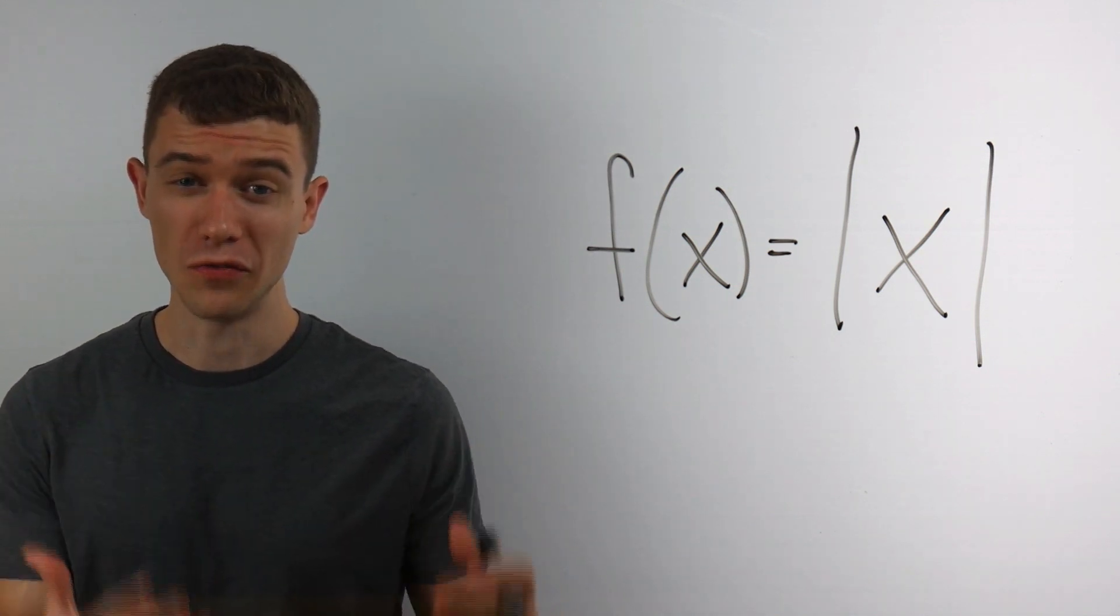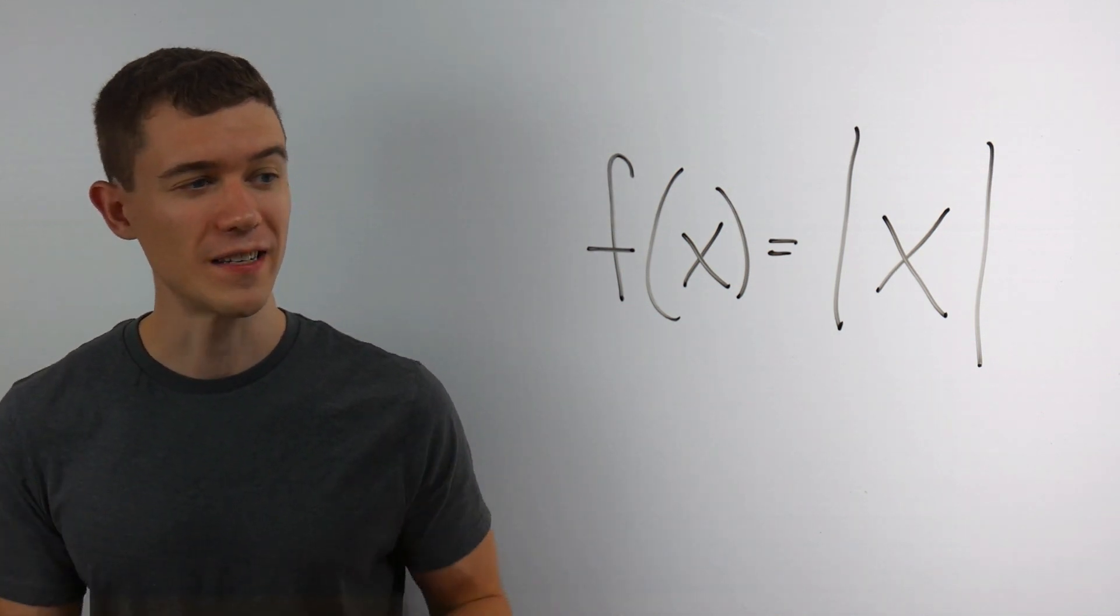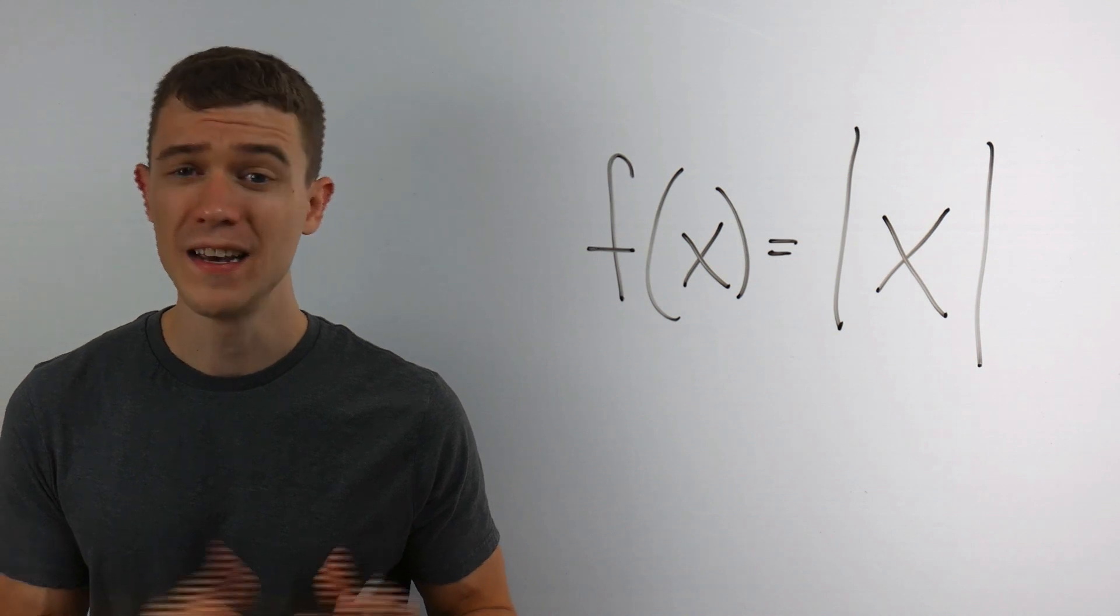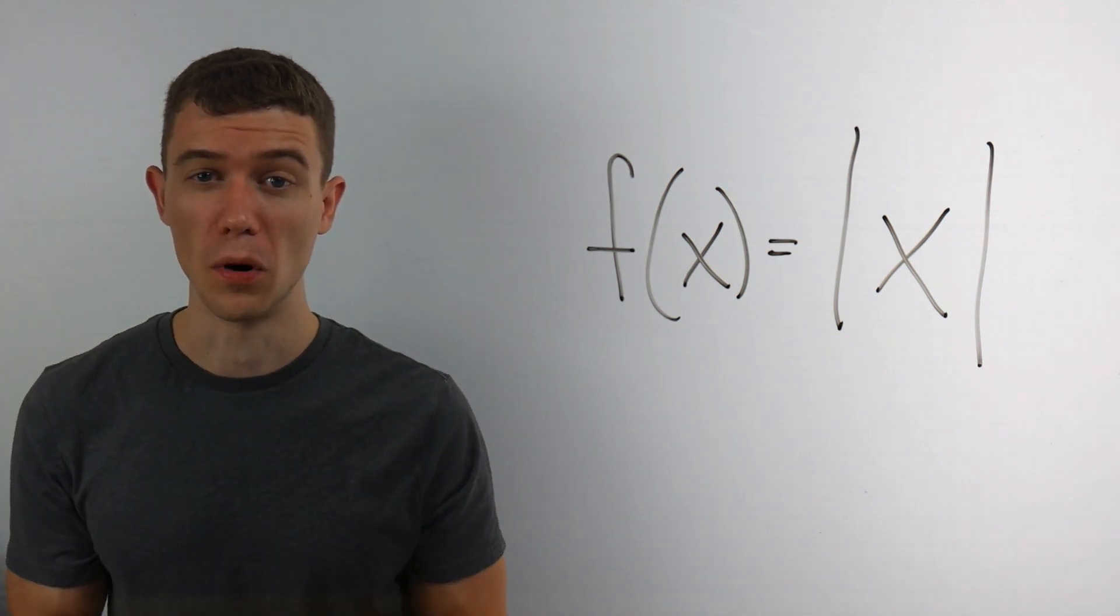This function is the absolute value of x. f of x is the absolute value of x. The absolute value is signified by those vertical bars.